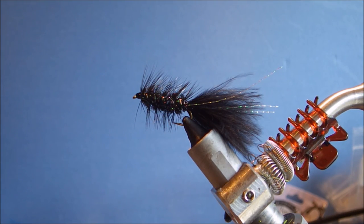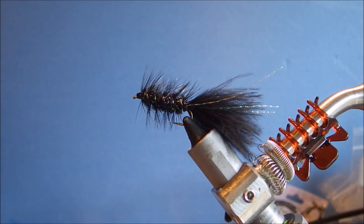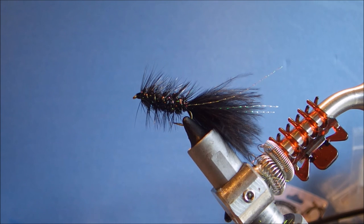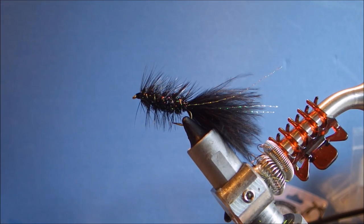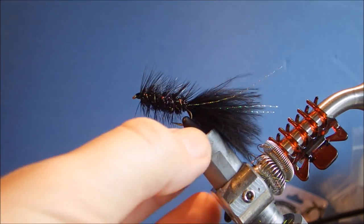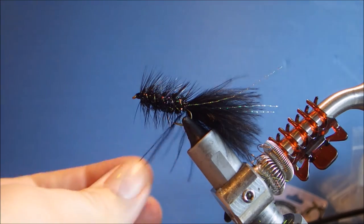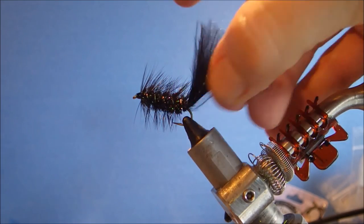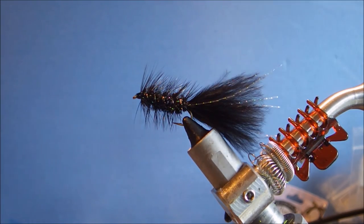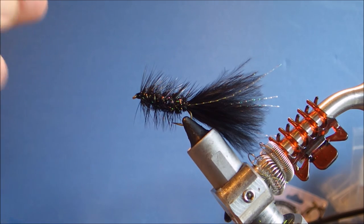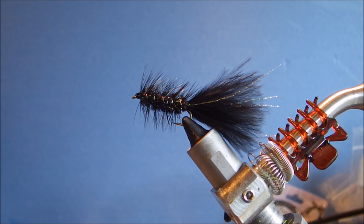So that's the woolly bugger. Classic, classic streamer pattern. Very, very easy to tie. But it lets you practice a couple of different techniques. And you can adapt, you can add a bead, you can add legs, you can do all sorts of stuff to the basic original fly to suit yourself.